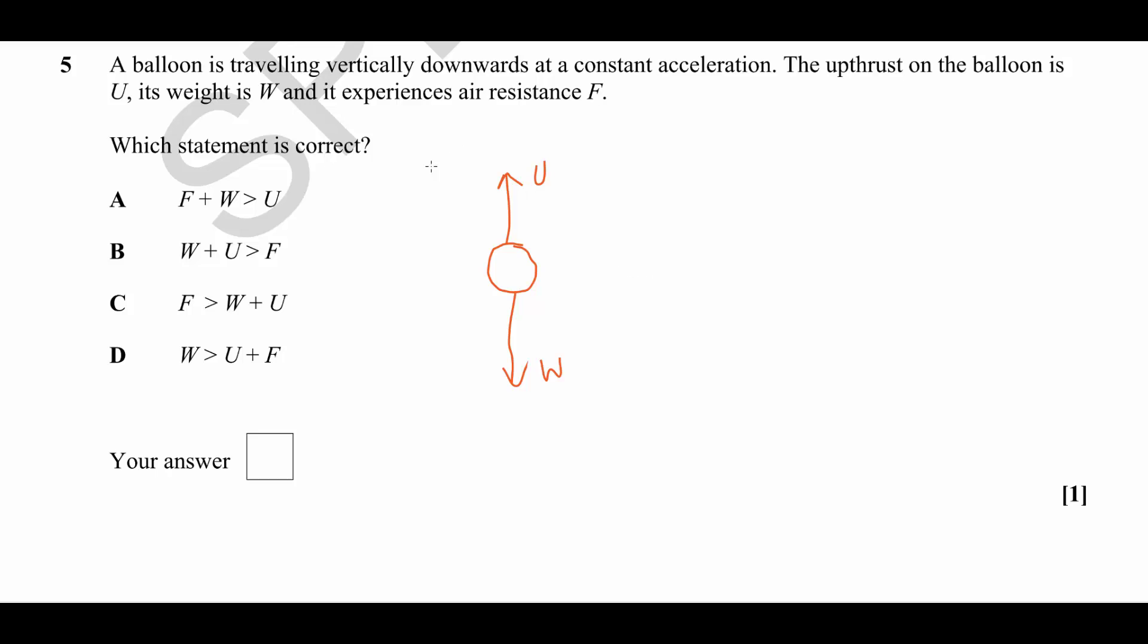We know that the balloon is traveling downwards so it has a velocity that is acting downwards. We also know that it is accelerating downwards, so that tells us that there is a net force acting down.